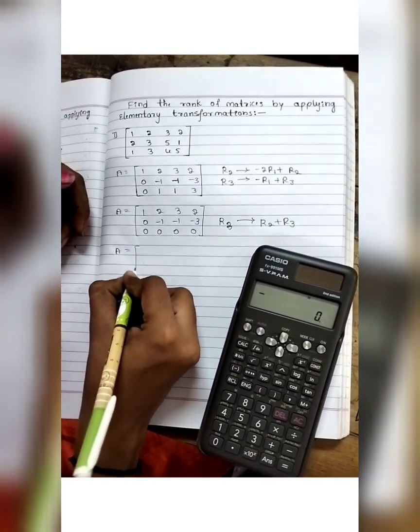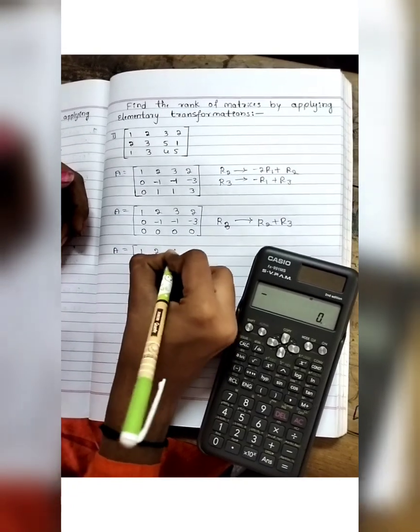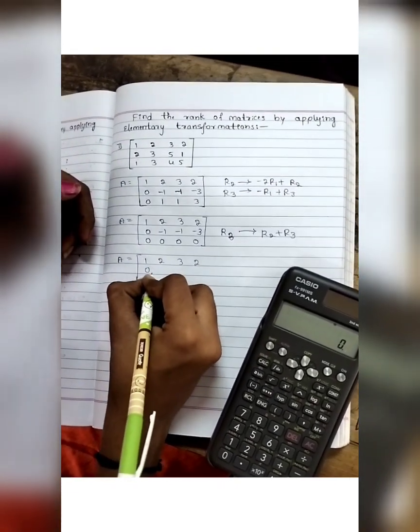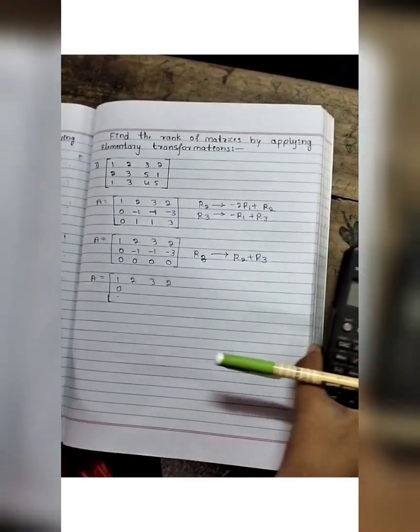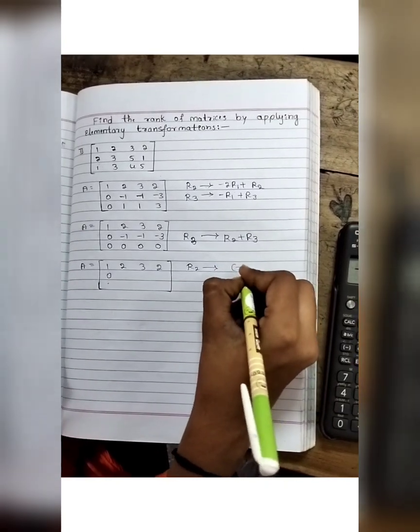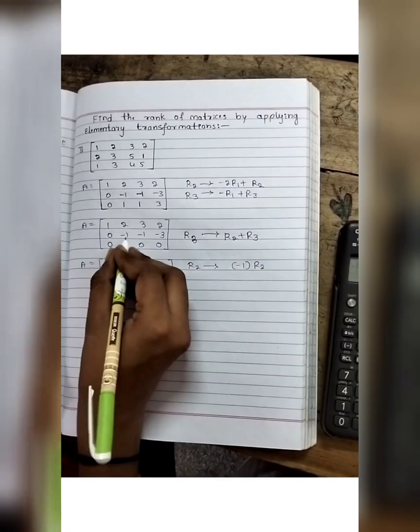Next, rank of matrix A equals, as it is written, 1, 2, 3, 2; 0. Now remove the minus sign. So applying the elementary transformation on R2, minus 1 into R2.